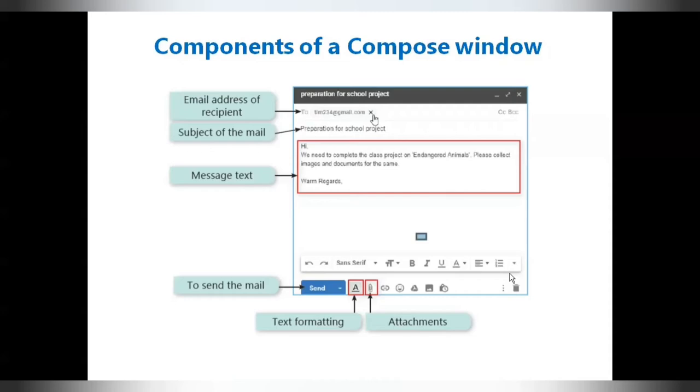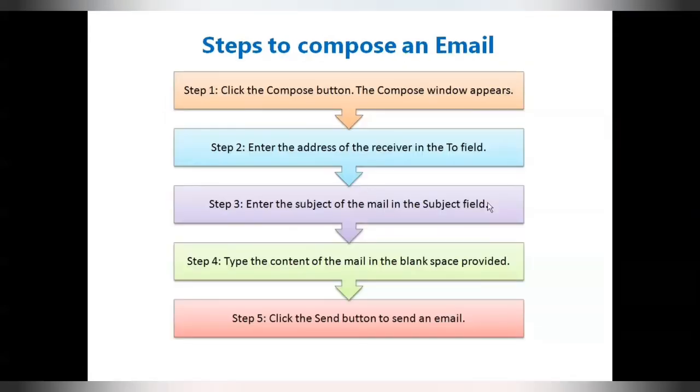Steps to compose an email: Click the Compose button. Compose window will appear. Enter the address of the receiver into the To field. Enter the subject of the mail in the subject field. Type the content of the mail in the blank space provided. Click the Send button option to send an email.